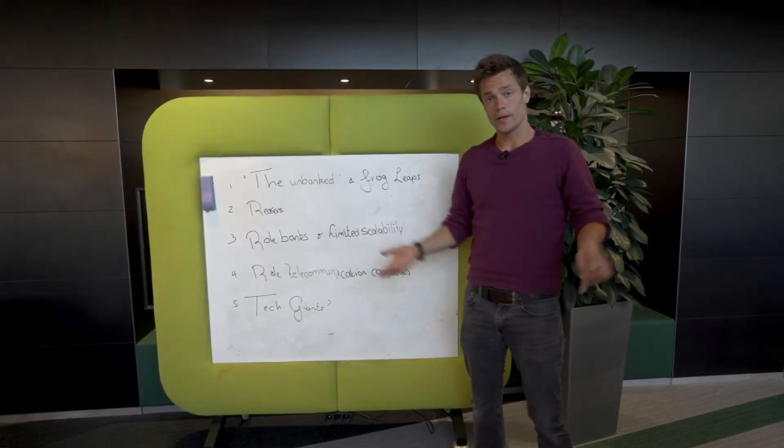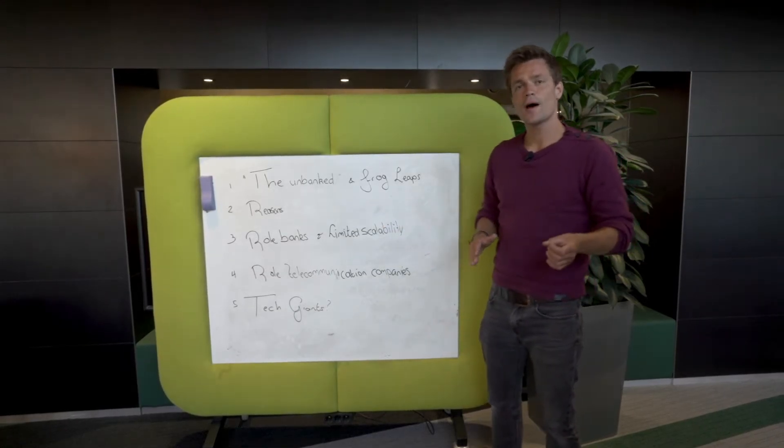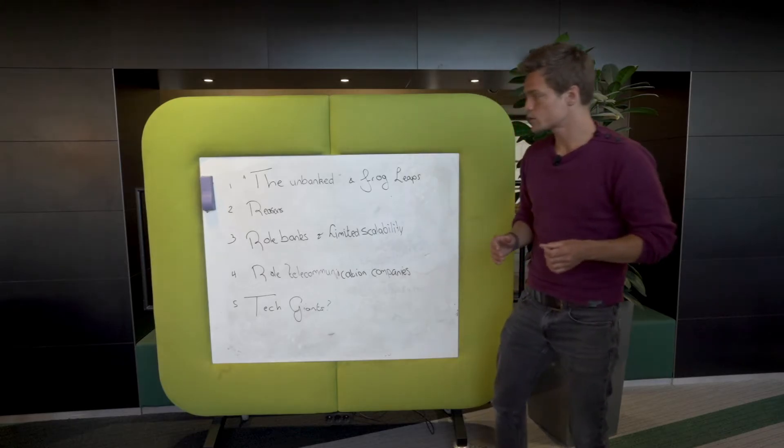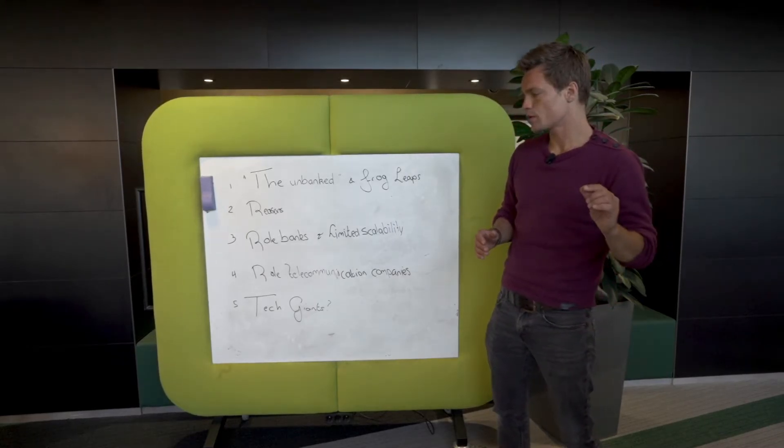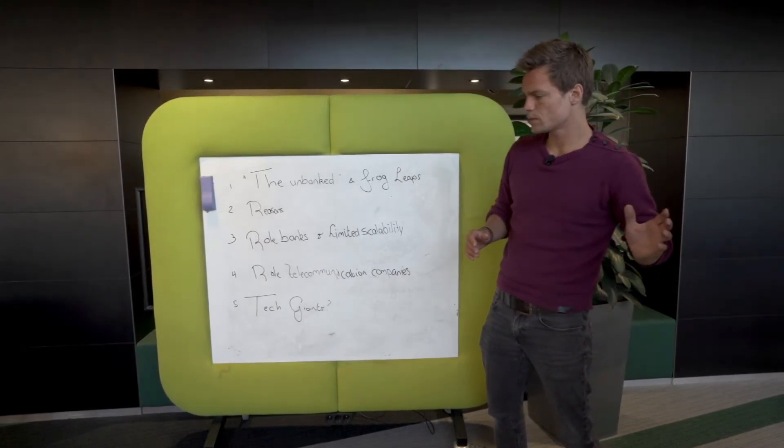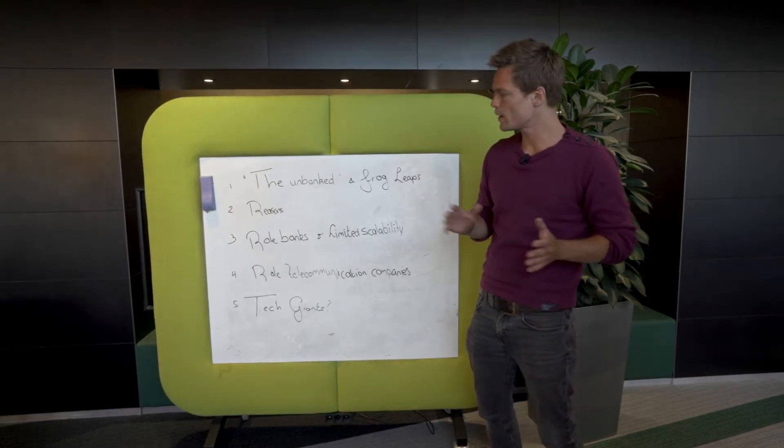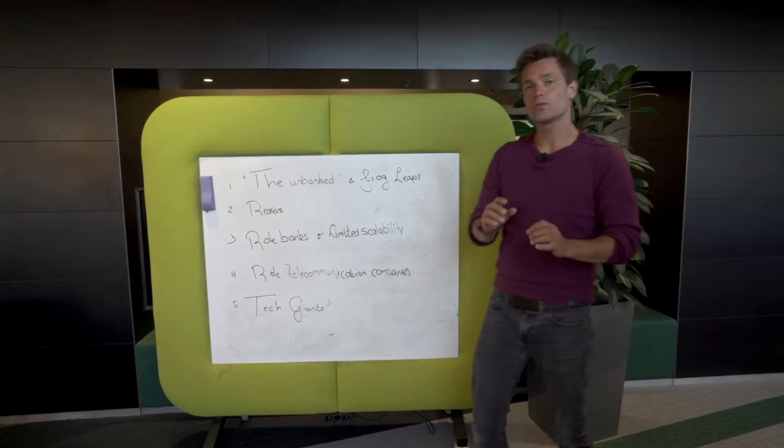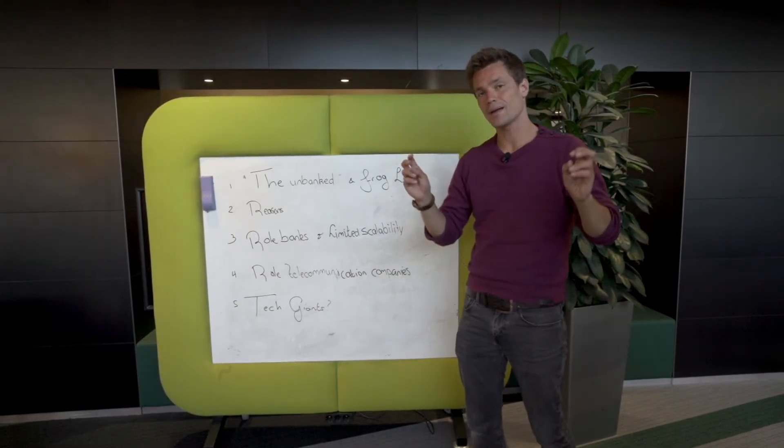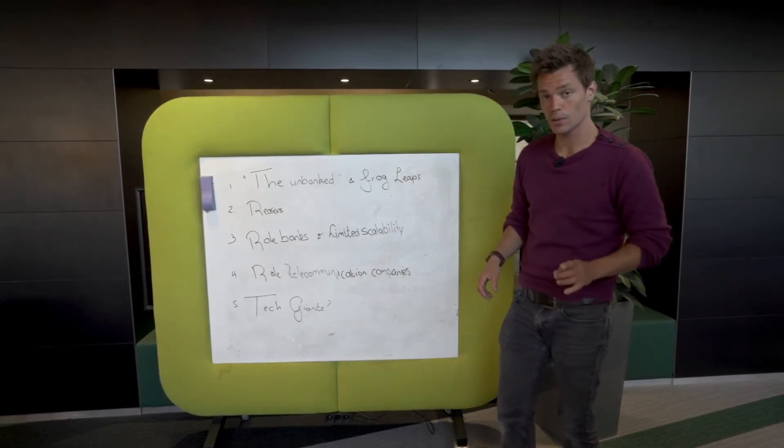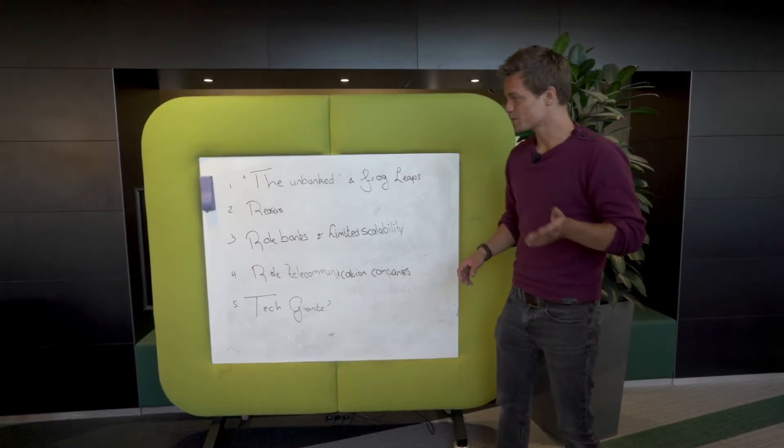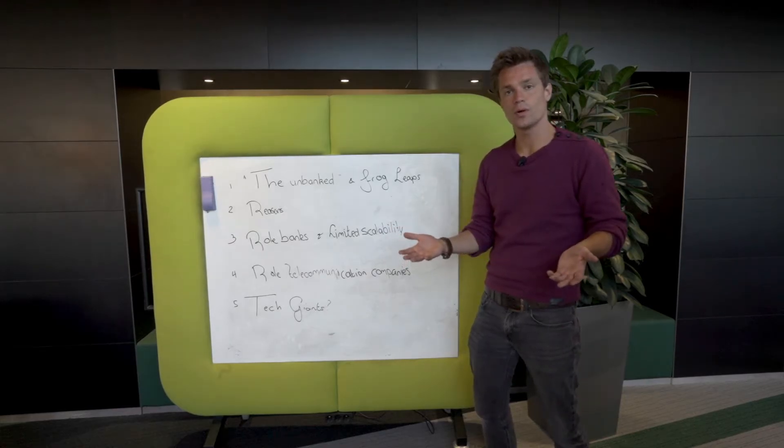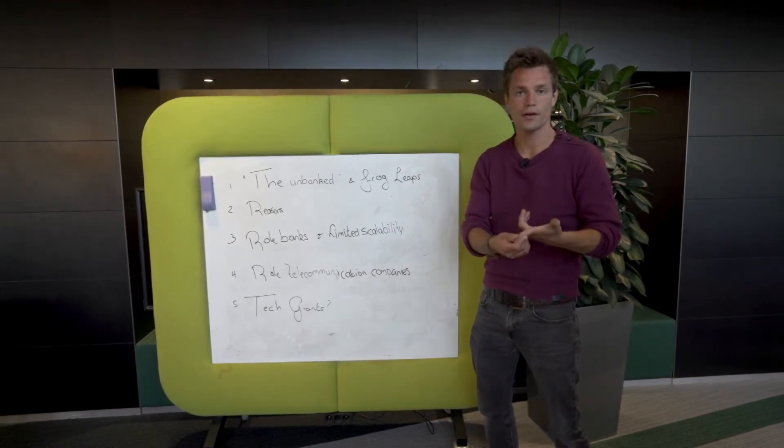So the unbanked, who they are and what their reasons are, you can find in the slides as well as in the literature. To sum it up, the main part of the categories are males between 15 and 35-ish. The total population of unbanked officially is 1.7 billion people who don't have access to the monetary system or financial products.